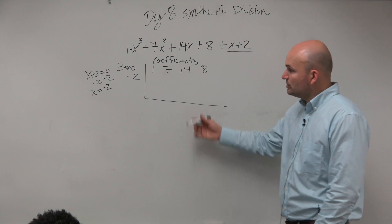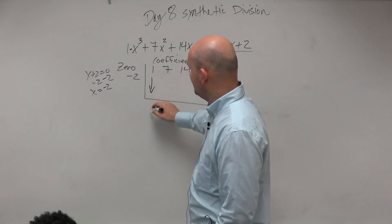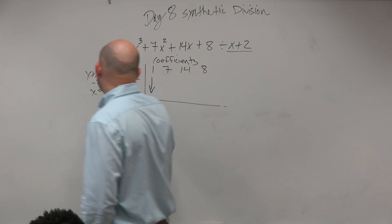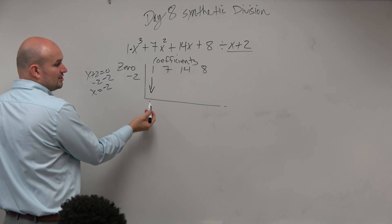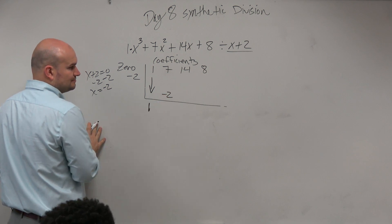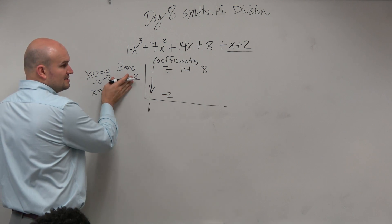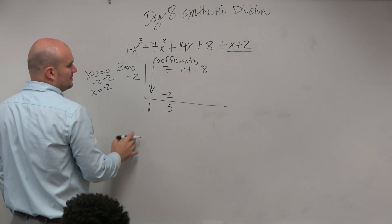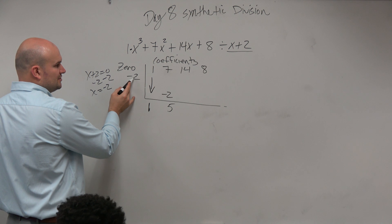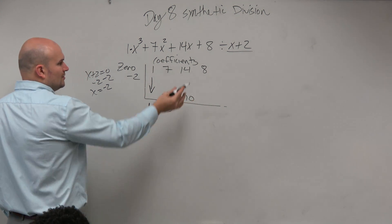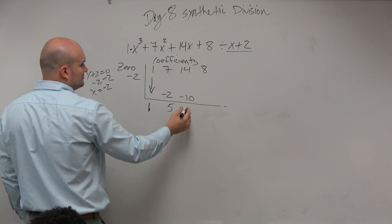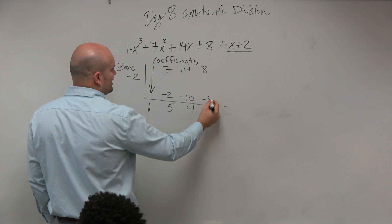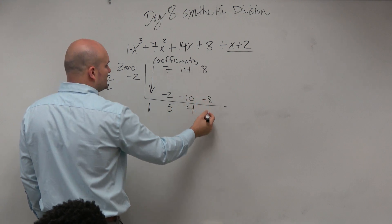The first term you bring straight down — that's your freebie. So that's 1. Then multiply on the diagonal and add on the vertical. 1 times negative 2 is negative 2. 7 plus negative 2 is 5. 5 times negative 2 is negative 10. 14 plus negative 10 is positive 4. 4 times negative 2 is negative 8. 8 plus negative 8 is 0.